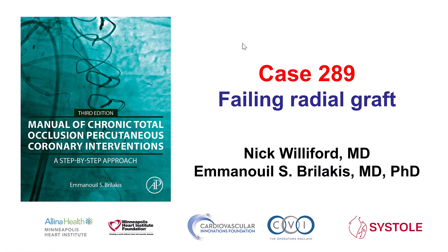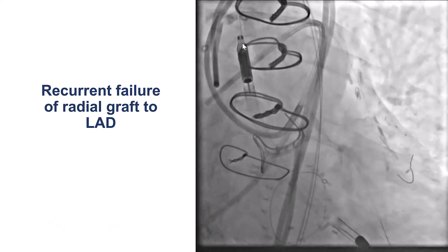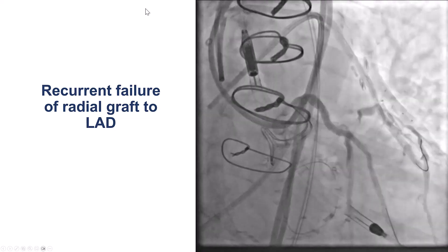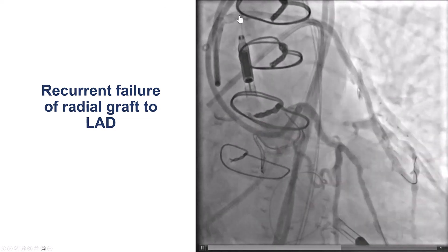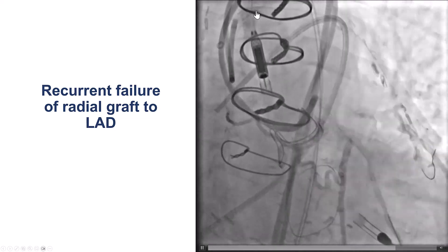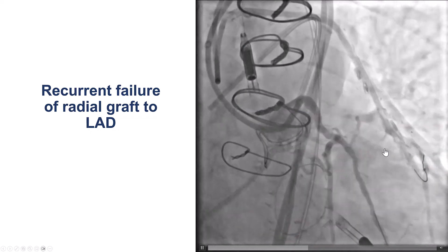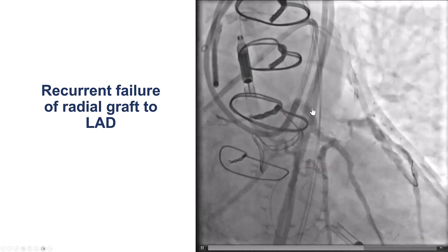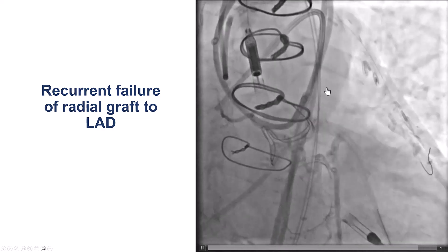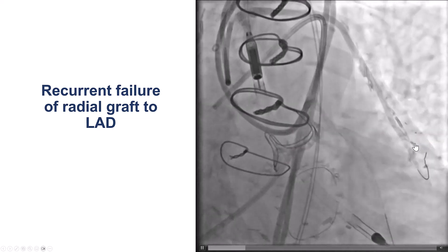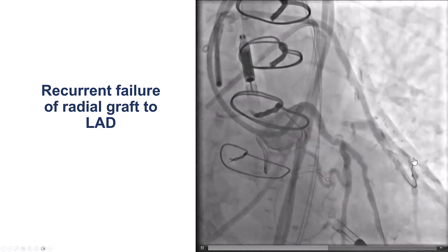This is Nick Williford and Manos Brilakis presenting case 289 for the Manual of CTO Interventions. This is a case of a patient with recurrent failure of a radial graft to the LAD. This is the coronary angiogram showing the radial graft that had multiple stents at the ostium. It kept re-occluding, and the question is what can we do next? He does have a flush ostial occlusion of the LAD, which is filling retrogradely and antegradely through this radial graft.